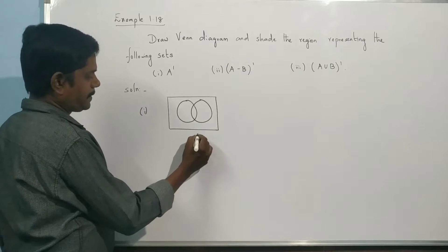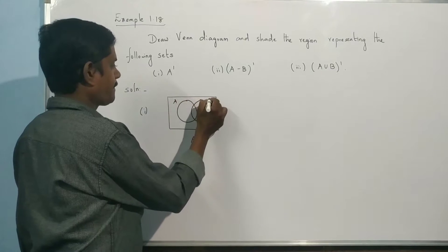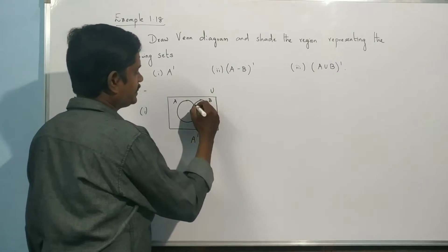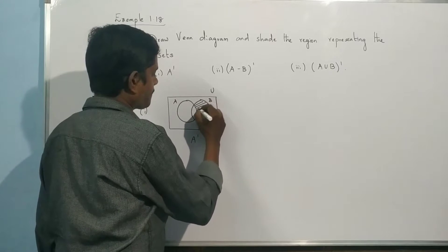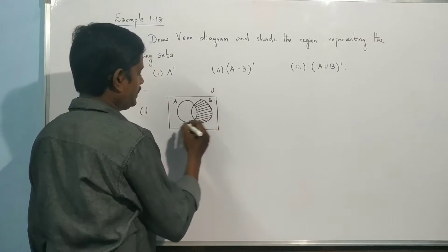First one, A dash. So this is A, this is B, this is union. So A dash, we do a shade. That's A dash.